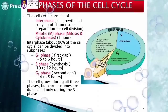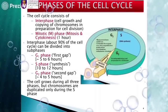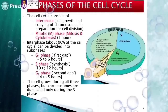G1 phase is the first gap phase in which the cell undergoes growth. The second subphase of interphase is S phase, in which the chromosomes duplicate, then followed by G2 phase. G2 phase is the second growth phase in which the cell prepares for cell division. The cells undergo growth throughout these three subphases of interphase; however, the chromosomes duplicate only during S phase.